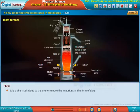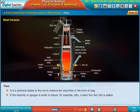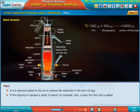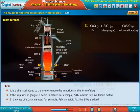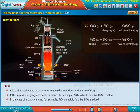Flux: It is a chemical added to the ore to remove the impurities in the form of slag. If the impurity or gang is acidic in nature, for example silicon oxide, a basic flux like calcium oxide is added. In the case of a basic gang, for example ferrous oxide, an acidic flux like silicon oxide is added.